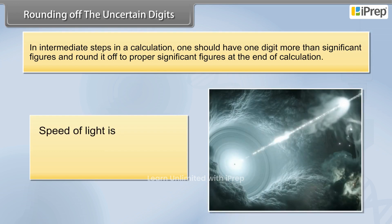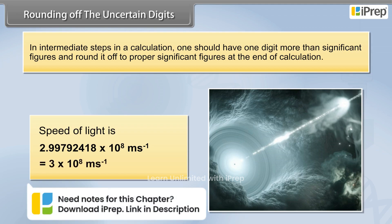Speed of light is 2.99792418 x 10^8 meters per second. A number with any significant figures can be written as 3 x 10^8 meters per second.